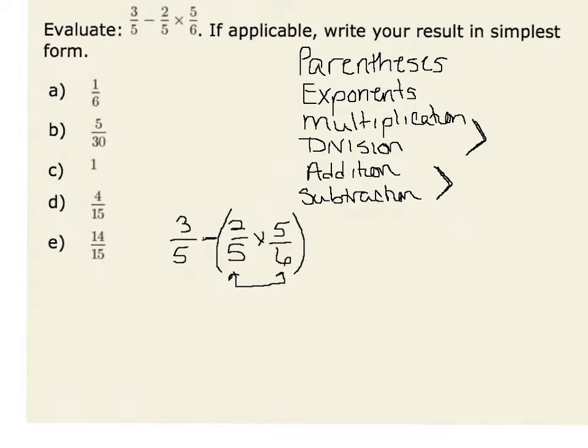Therefore, 2/5 times 5/6 is the same as 2 times 5 or 10 over 5 times 6, which is 30. Then we can simplify 10/30 to give us 1/3.